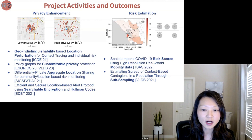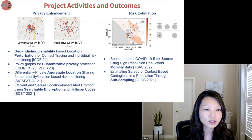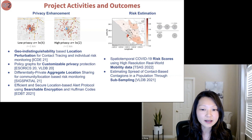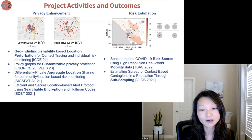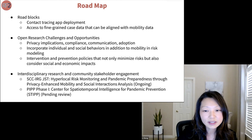We also developed techniques for ensuring differential privacy of aggregated location or mobility data to support community or location-based risk estimation, as well as alternative searchable encryption techniques that provide a stronger privacy guarantee with slightly more efficiency cost. On the risk estimation front, we developed models for estimating fine-grained risks associated with particular regions and times using real-world mobility data, as shown in the map — mainly Cyrus's team's work. We also developed subsampling techniques for better estimating spread in the population from partial mobility data.